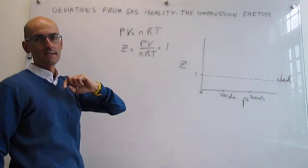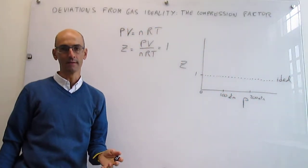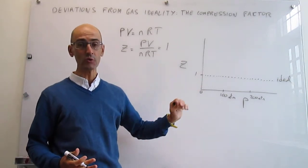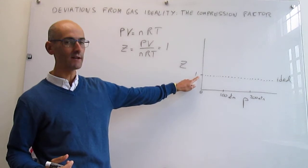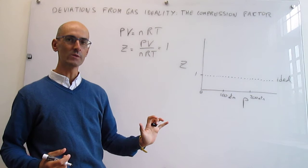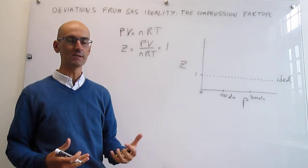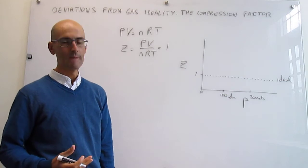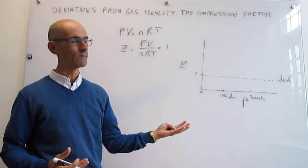But gases do not behave like this under all pressures. At low pressures they do have Z=1, but as soon as you increase the pressure to maybe 10, 20, 30 atmospheres - that's pretty high pressure - then you start to see departures from this trend.